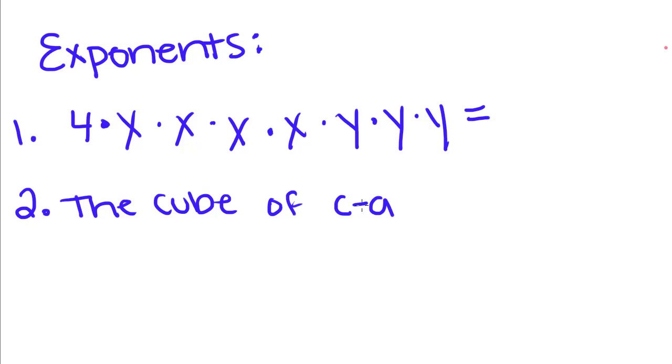You remember an exponent is written like x squared or y cubed. So this number right here tells us how many times x is going to multiply by itself. So for x squared, if you remember talking about squares in geometry, it's x times x, or y cubed is y times y times y.